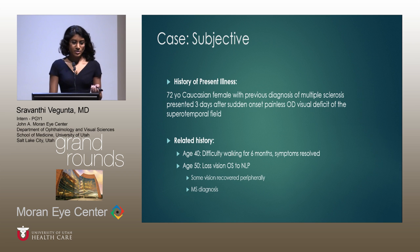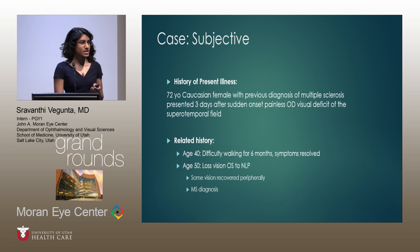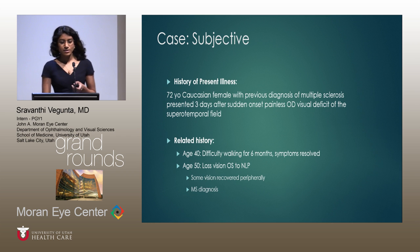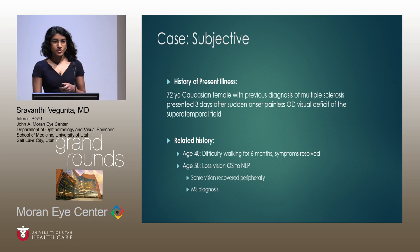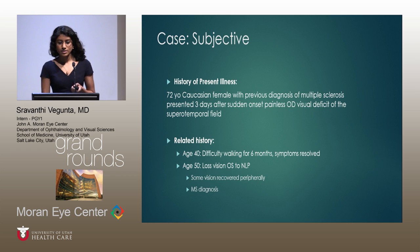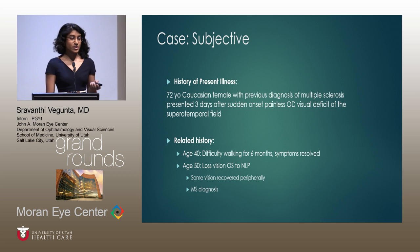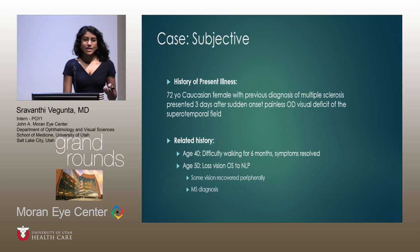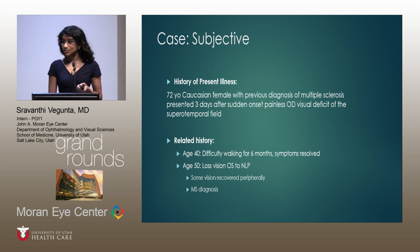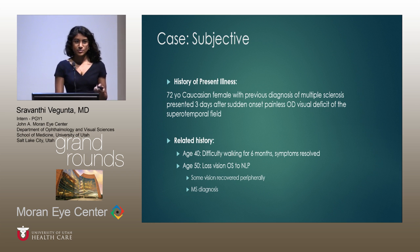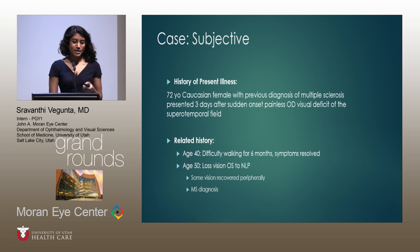In her relevant past medical history, at age 40 she had an episode of difficulty walking for about six months which gradually improved. At age 50 she had painless loss of vision in her left eye, with vision decreasing to no light perception. She regained some peripheral vision but remained at count fingers at one foot. At that time, an MRI of her brain showed brain plaques and she was diagnosed with multiple sclerosis, and started on Copaxone, a chronic immunosuppressive therapy.